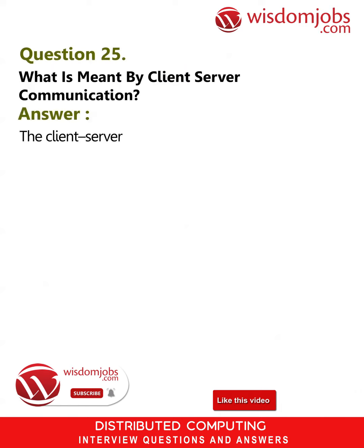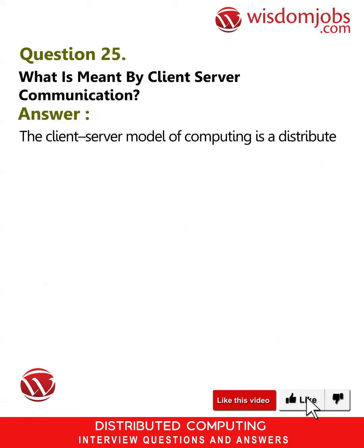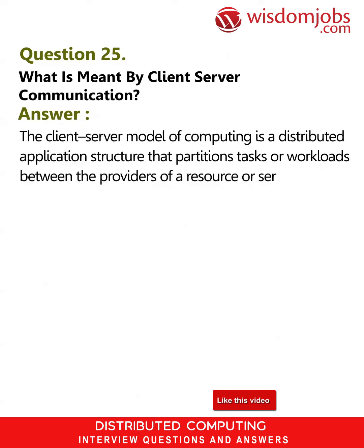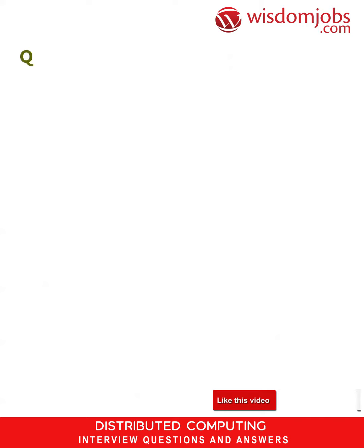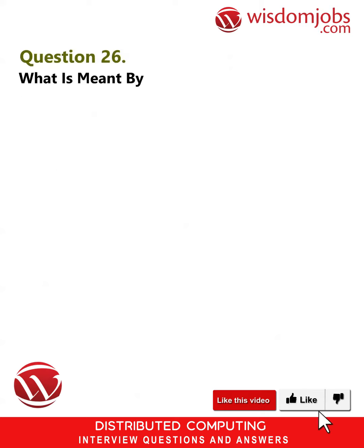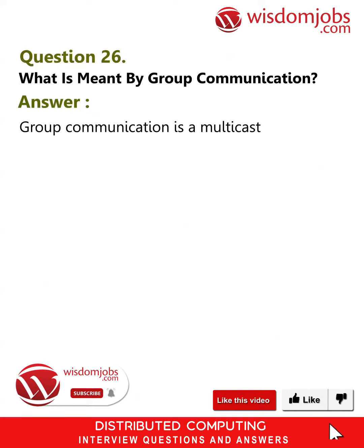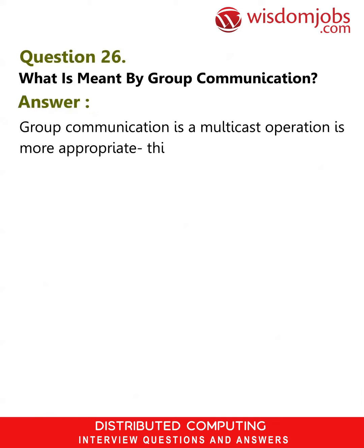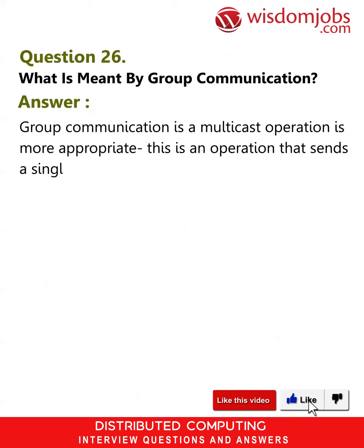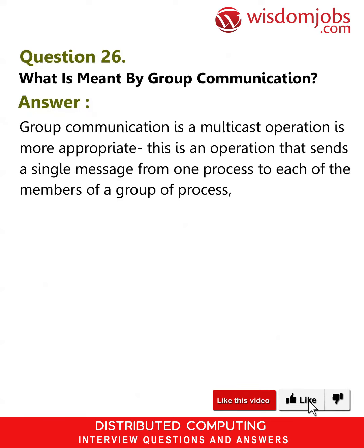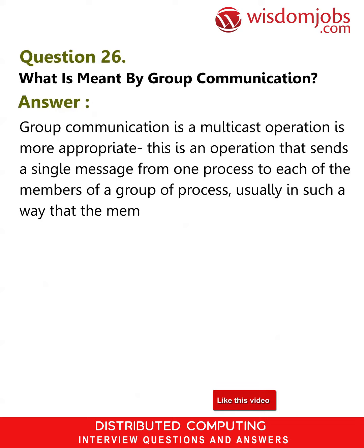Question 25: What is meant by client-server communication? Answer: The client-server model of computing is a distributed application structure that partitions tasks or workloads between the providers of a resource or service, called servers, and service requesters, called clients. Question 26: What is meant by group communication? Answer: Group communication is a multicast operation that sends a single message from one process to each of the members of a group of processes, usually in such a way that the membership of the group is transparent to the sender.